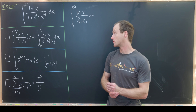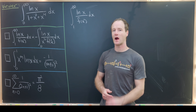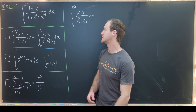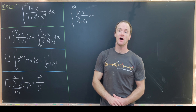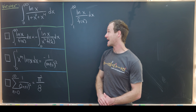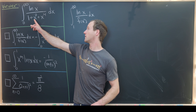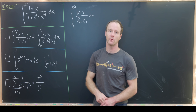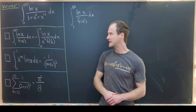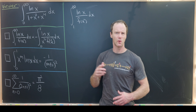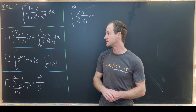Here I've got a nice viewer-suggested integral. Our goal is to find the integral from zero to infinity of the natural log of x over 1 plus x squared plus x to the fourth. We're going to use three tools in order to break this up into a manageable calculation.